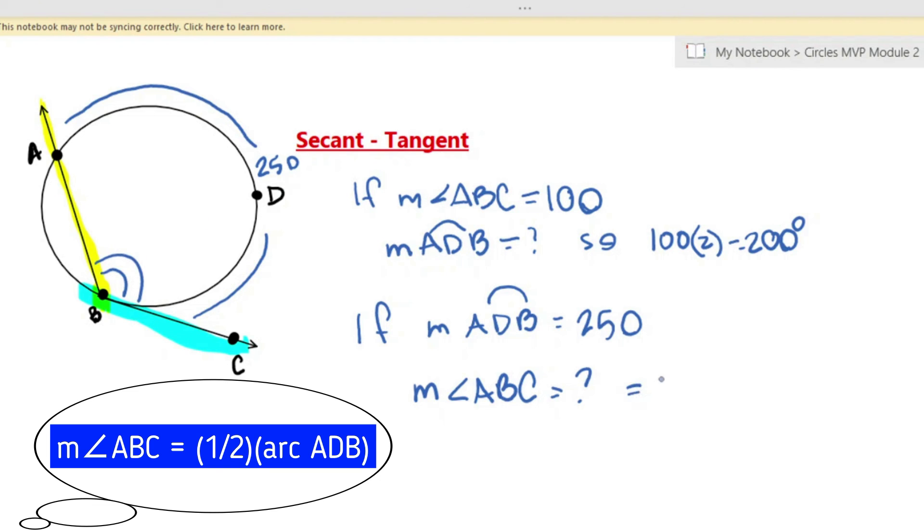Alright, so with this one, you would do the reverse of what happened in the previous one. You would divide that arc measure by 2 and that would give you 125, which is the measure of the angle.